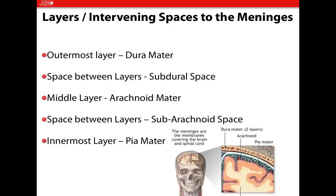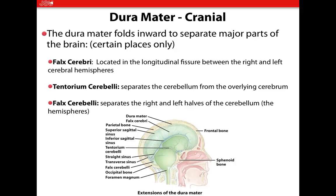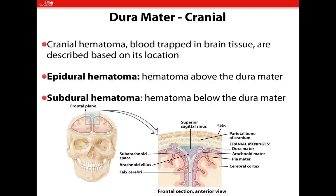Starting with the dura mater — this is the outermost layer of the meninges, and it is a very dense, thick, physically strong layer. With the dura mater, a hematoma is where blood is trapped on the brain tissue, and you can describe a hematoma based on its location relative to the dura mater. If it's an epidural hematoma, that is above the dura mater. If it's below the dura mater, it's a subdural hematoma. You're going to hear this a lot in medical terminology.